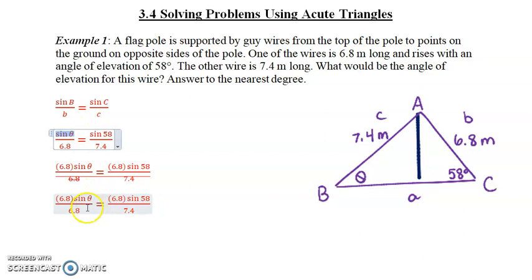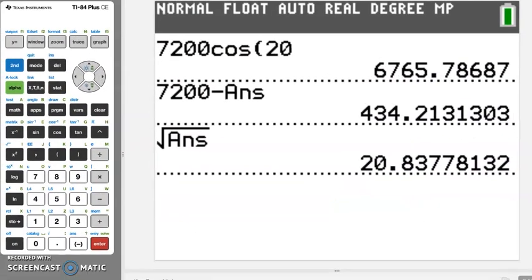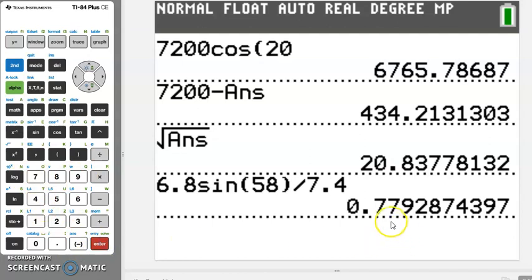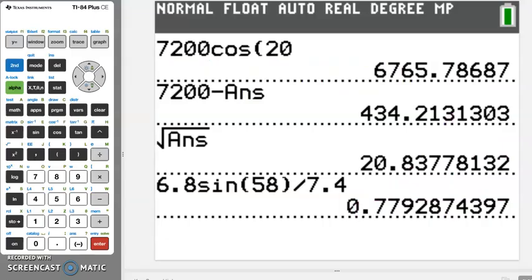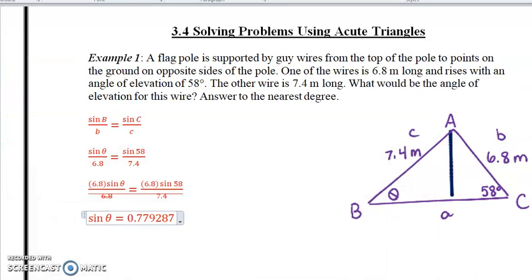All we have here is sine theta equals 6.8 sine 58 divided by 7.4. So we'll do this on a calculator. We have 6.8 sine of 58, divided by 7.4, and we get 0.7782 and so on.